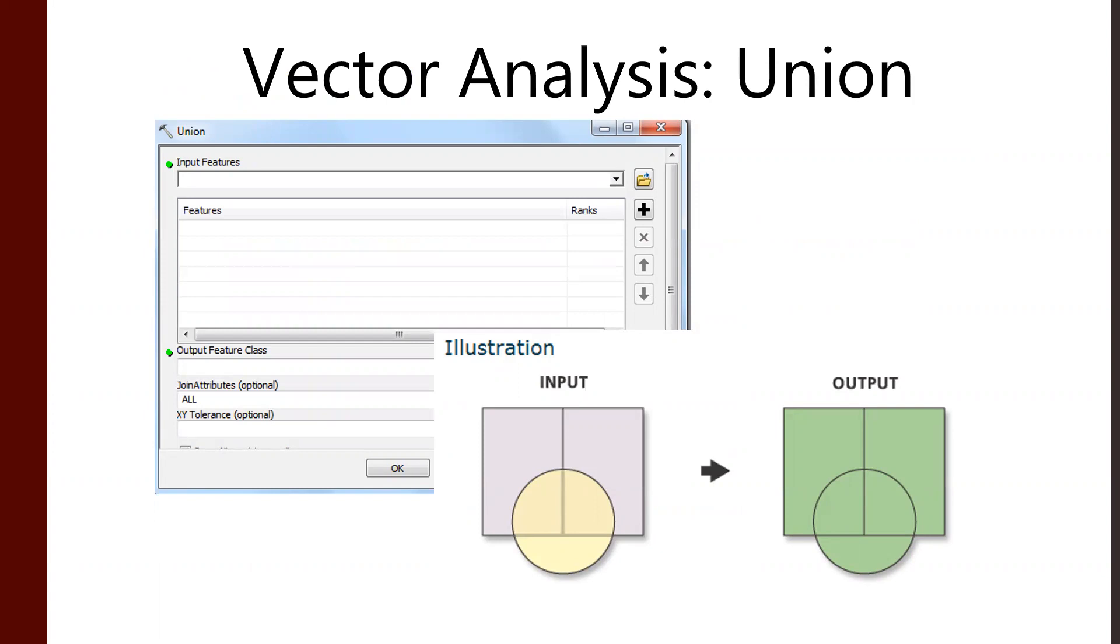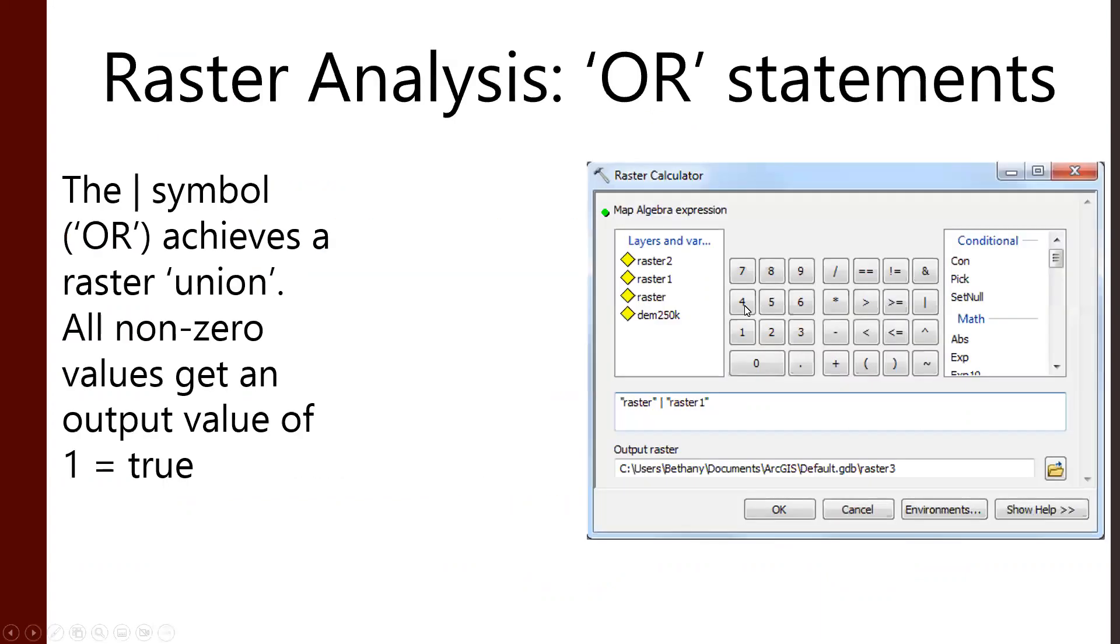Now, if that intersect example a couple slides back got you thinking, wait a second, what if I want everything? Then the union is for you. As we know, a union - we're stronger together, more than a hero, a union man. Unions bring all of the features together into one output. So we have our circle and our rectangle all hanging out, all enjoying an integration of each other's attributes. It's inspirational. Raster data, we call this OR.